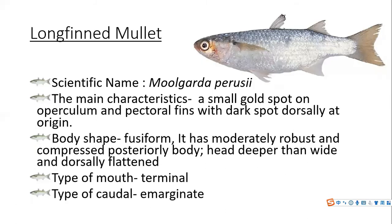Next is the longfin mullet. Its scientific name is Moolgarda perusii. The characteristics of the longfin mullet include a small gold spot on the operculum and pectoral fins with a dark spot dorsally at the origin. The body shape of the longfin mullet is fusiform, and it has a moderately robust and compressed posterior body. The head is deeper than wide and dorsally flattened. The longfin mullet has a terminal mouth and an emarginate caudal fin.